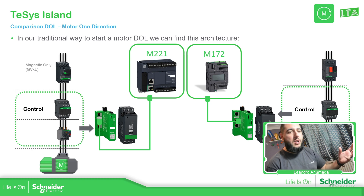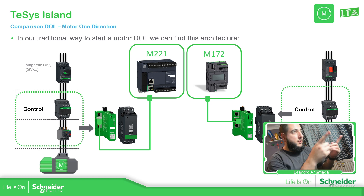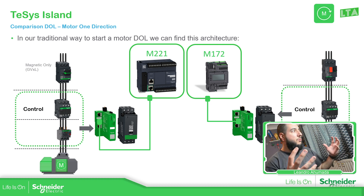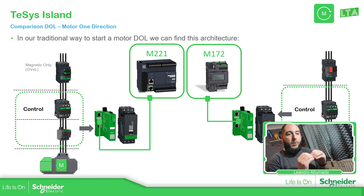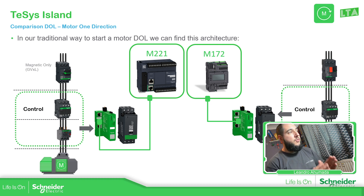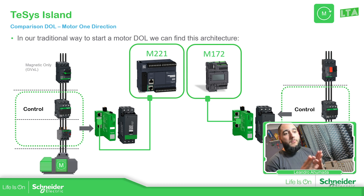Using the TeSys Island, we can replace the contactor and the overload — or just the contactor if you have the motor circuit breaker with the overload. So we reduce the components down to just one starter. And we have the possibility to add different features. If you compare this one-to-one for just one motor, you can see the advantage on the wiring: you just have one communication cable to communicate to the bus coupler, which is the green part, and then you just link using the ribbon communication on top to the starter. That will help you to use one communication cable in order to control the motor.